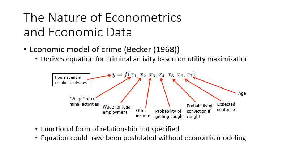X3 is other income — income from different resources except wages from criminal or legal employment. We expect the relationship between Y and X3 to be negative. X4 is the probability of getting caught — the percentage of those doing criminal activities who are apprehended. It should have a negative relationship with Y.